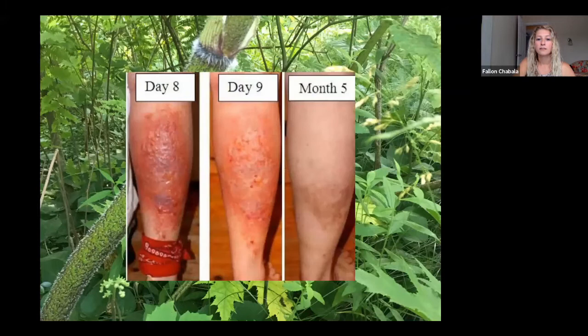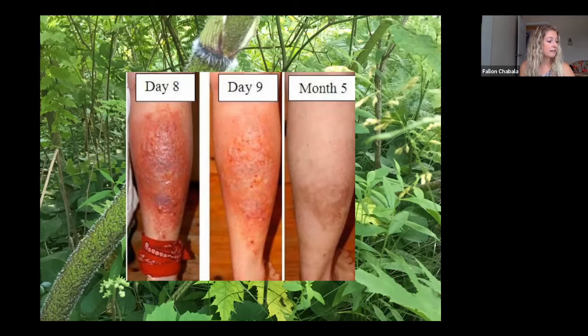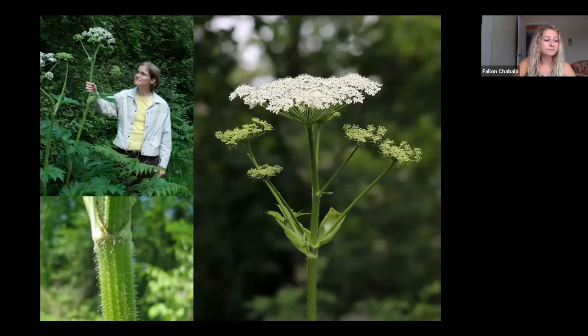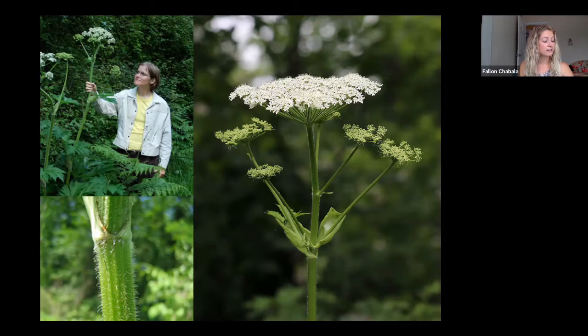Giant hogweed has a photodermatitis quality — if you touch the oils to your skin, within 48 hours it can cause a severe burn. If you get those oils in your eyes, you could have potential temporary or permanent blindness. Some look-alike species include cow's parsnip, which only reaches heights of about seven feet tall. The flowers have more of a flat top instead of an umbrella shape, the hairs on the stems are softer, and it lacks the purple blotches on the stem. The next look-alike is angelica, which can reach heights of about nine feet tall. The stems are entirely purple, the flower heads are more spherical in shape, and the leaves are more like a normal compound leaf.